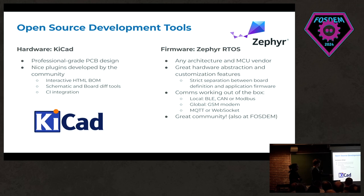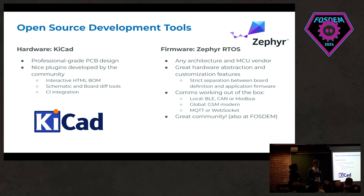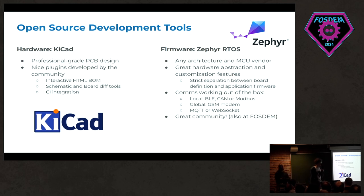We have lots of communication stacks in Zephyr already working out of the box for the energy access market. GSM communication is very important because most off-grid systems need remote communication through GSM. We can also use Bluetooth Low Energy, CAN, and Modbus for more local communication. There are also some Zephyr contributors here at FOSDEM — if you want to learn more, I'm an active contributor and maintainer, so let me know afterwards.